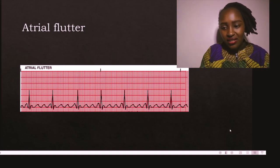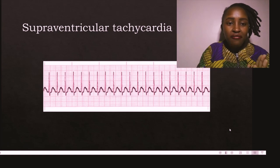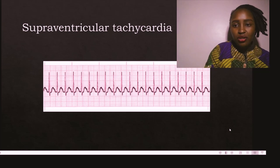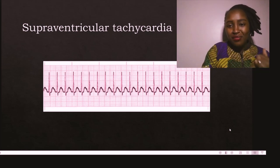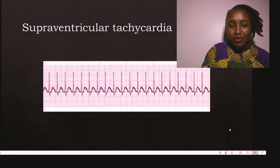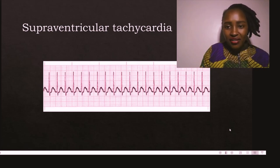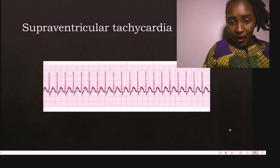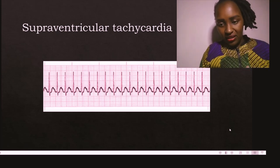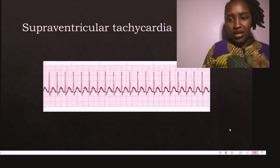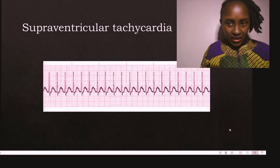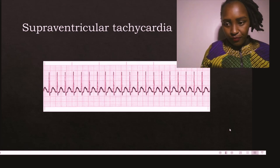For supraventricular tachycardia (SVT): remember that anything originating above the ventricles will have a narrow QRS complex. The rhythm is regular, the rate is very rapid — counting QRS complexes and multiplying by 10 gives above 150 beats per minute. The P wave and T wave cannot be told apart. This is characteristic of SVT — a regular rhythm, tachycardic, with a narrow QRS complex.